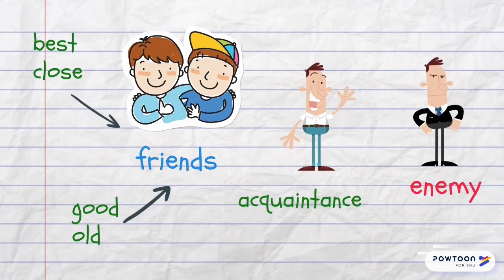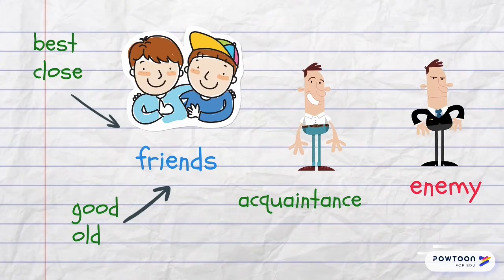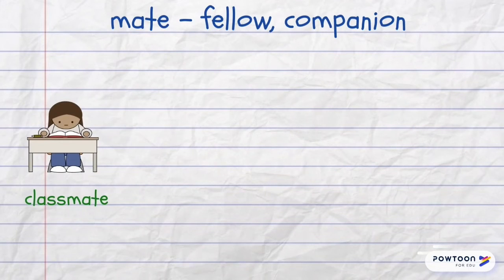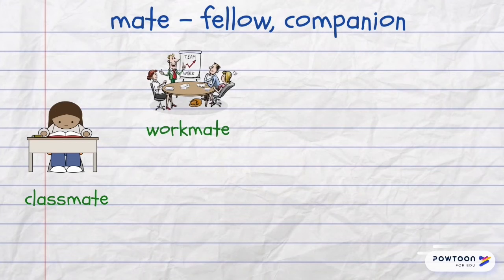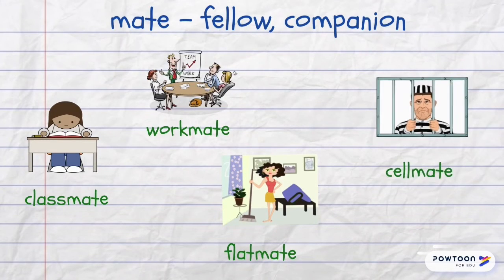The opposite of the word 'friend' is the word 'enemy'. When talking about fellow members of a group or a team, you can use the word 'mate'. For example, a classmate is someone you study with, a workmate is someone you work with. If you share a flat with someone, this person becomes your flatmate, and in some unfortunate situations people become cellmates when they go to prison.